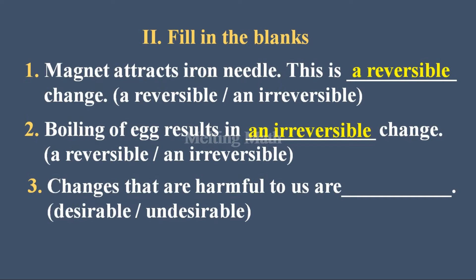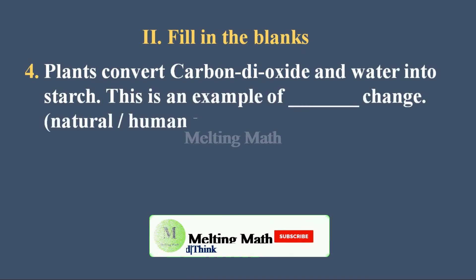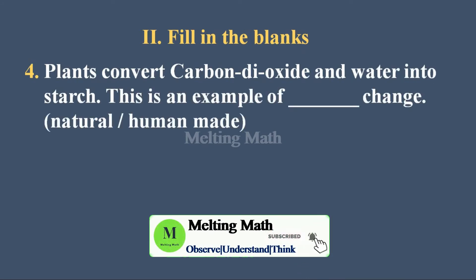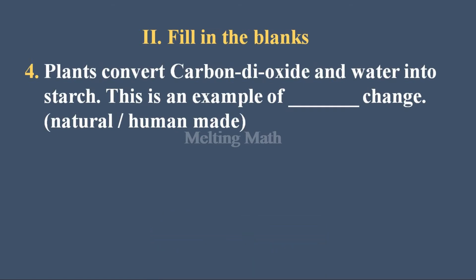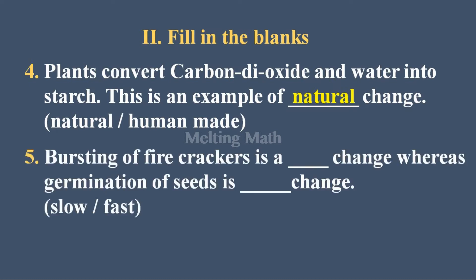Question three — changes that are harmful to us are a blank change: desirable or undesirable? Everybody knows it's an undesirable change — changes which are harmful to our environment and not useful for us come under undesirable change. Question four — plants convert carbon dioxide and water into starch; this is an example of a blank change. It's a natural change, because it happens because of the plant's own nature.